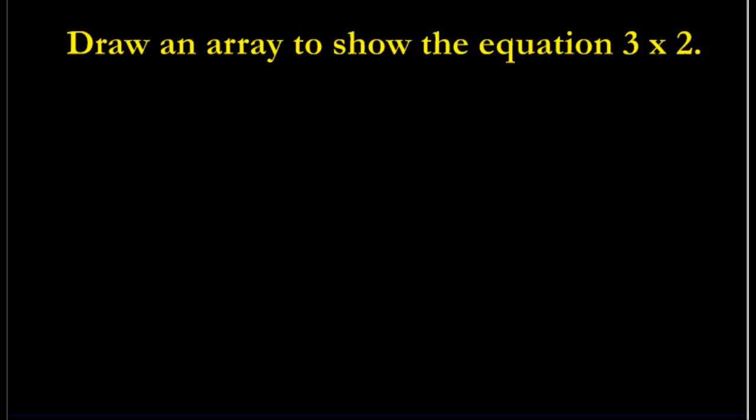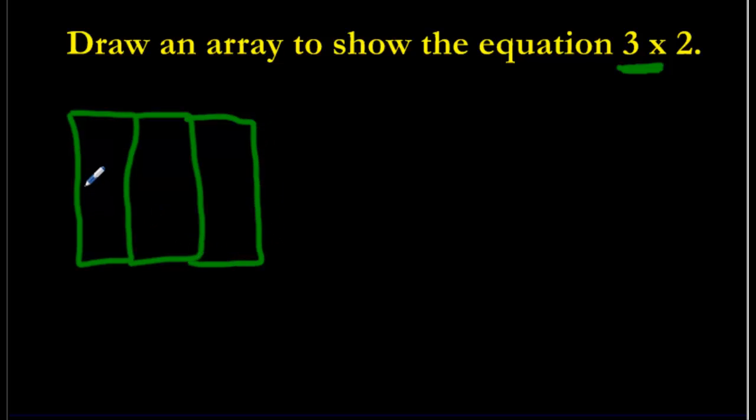Alright, we're back. Let's see how we did. So, draw an array to show the equation three times two. Three groups means I need, or three times means I need three groups. So, I'm going to make my groups this way. I'm going to make a group like this, one, two, three. So, I still need to show my groups and I need to put two inside of each one.